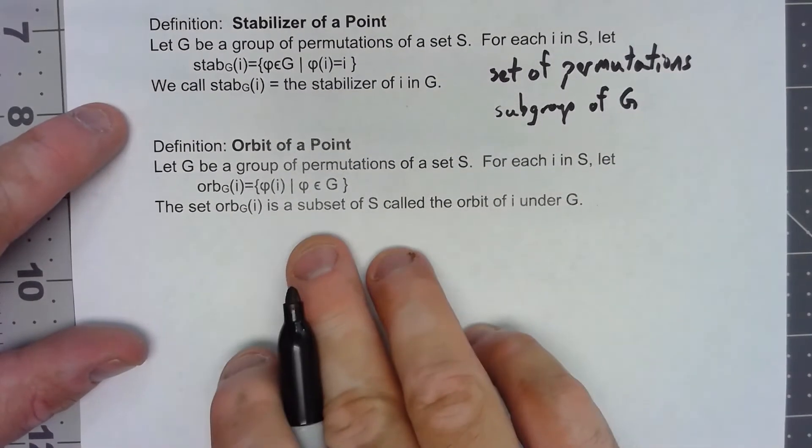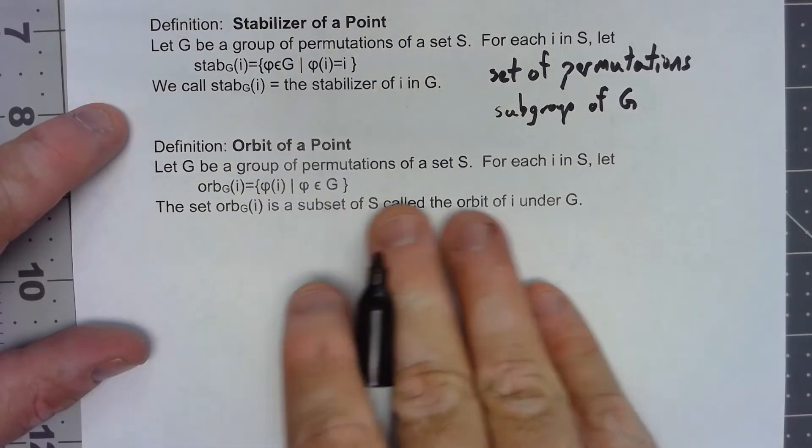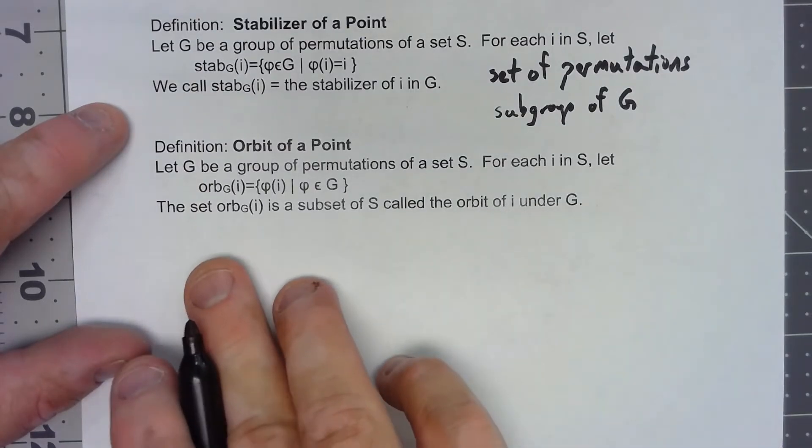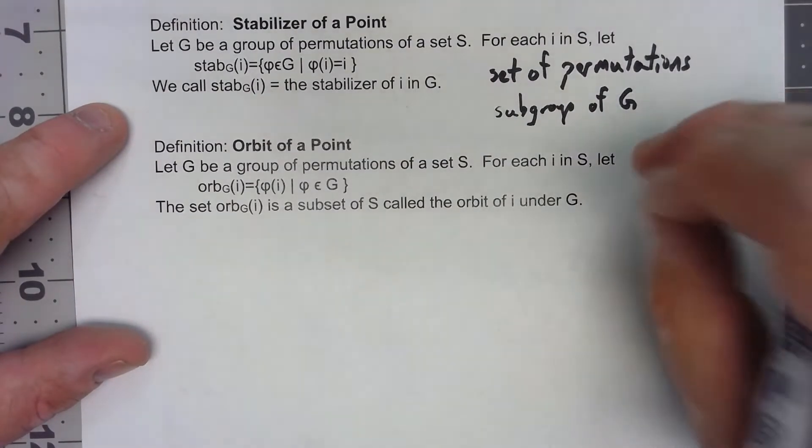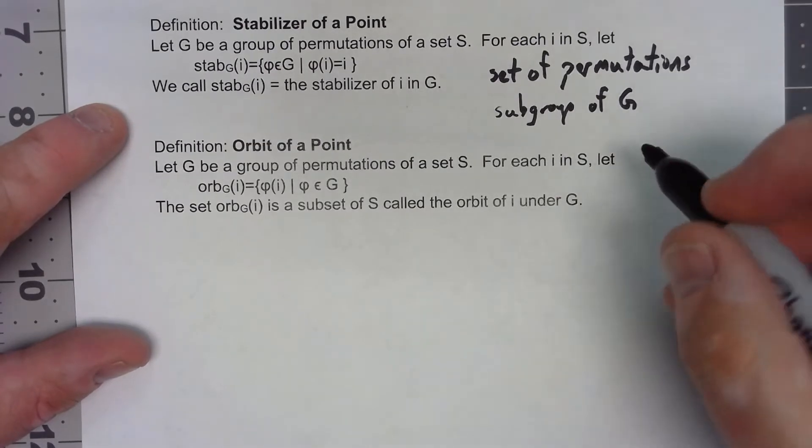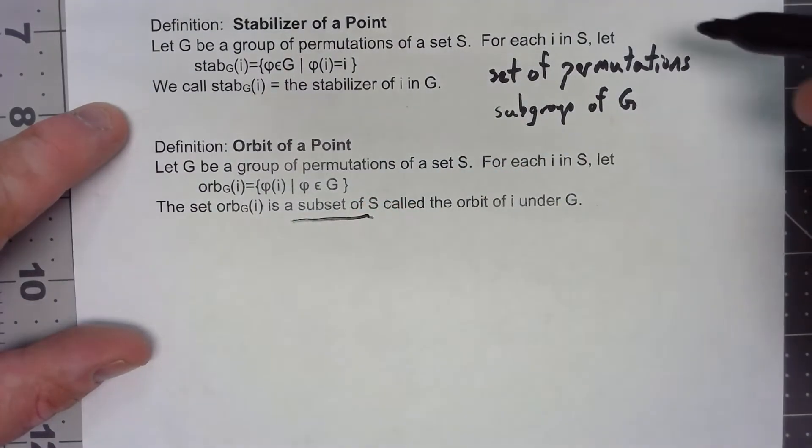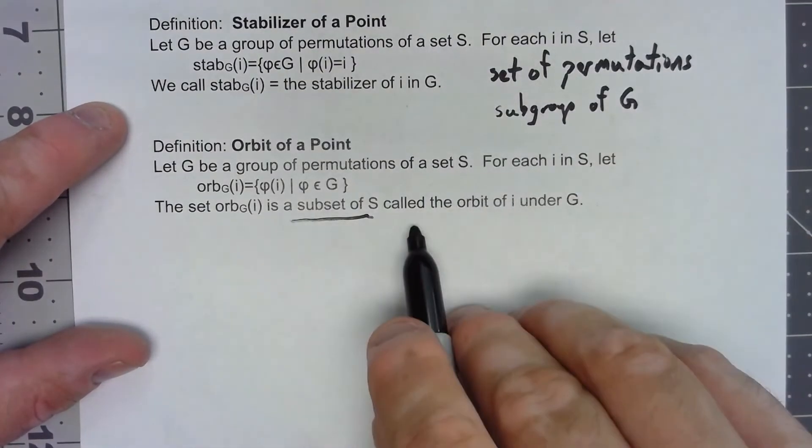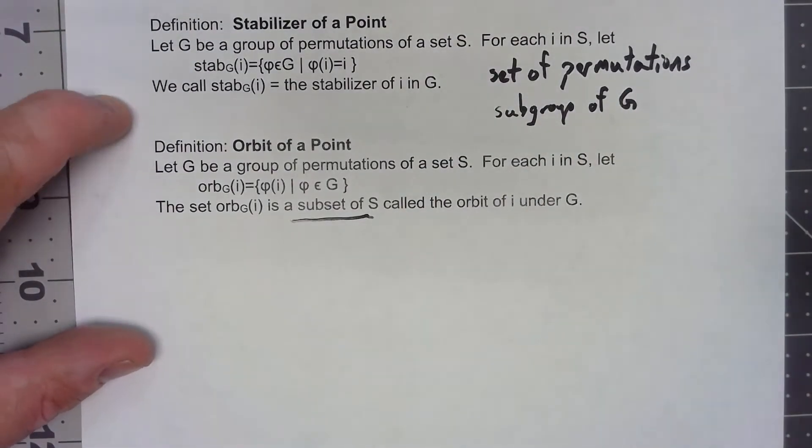The other thing we've got is the orbit of a point. We're going to start out very much the same. Then we're going to say the orbit is everything that that element gets mapped to under the permutations. So specifically, this is a subset of S. The stabilizer is a set of permutations, a subset of G. The orbit is a subset of S, a subset of the set of things that are being affected by the permutations.